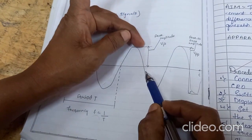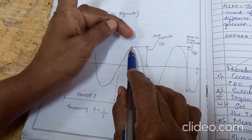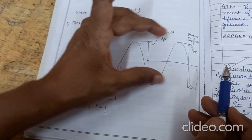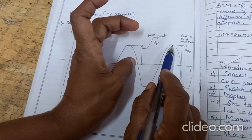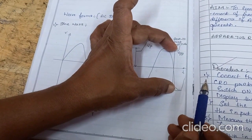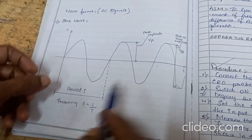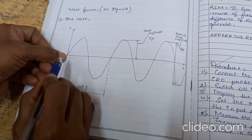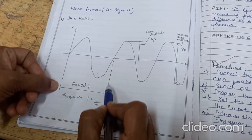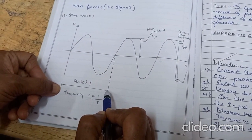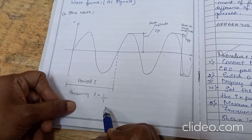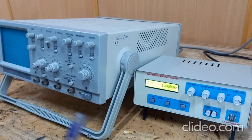The peak voltage is measured from the x-axis to the tip of the sinusoidal waveform. The peak-to-peak voltage is measured from the positive peak to the negative peak. The time duration from 0 to the end of 360 degrees is the period. We apply the formula f = 1/T to find the frequency.